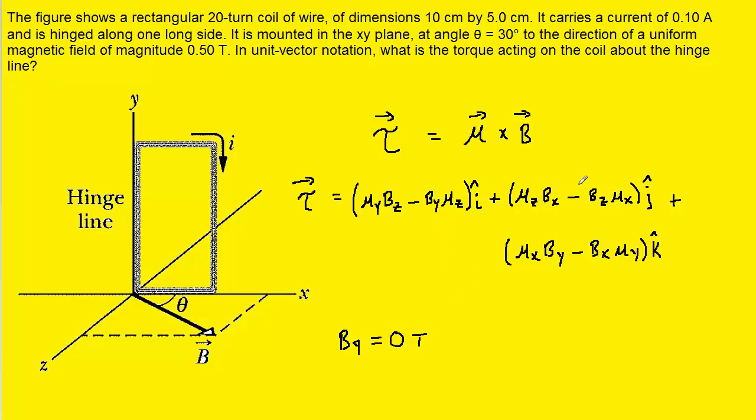So anywhere in this cross product we see B_Y, we can plug in a 0, and that's basically going to cancel out that term there. So for example, right here B_Y would be 0, and when we multiply it by mu_Z, that's going to be 0 still. So we can actually cross out this right here, and then B_Y also appears right here. So that can eliminate.